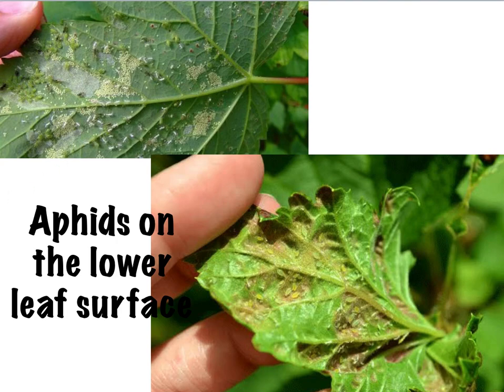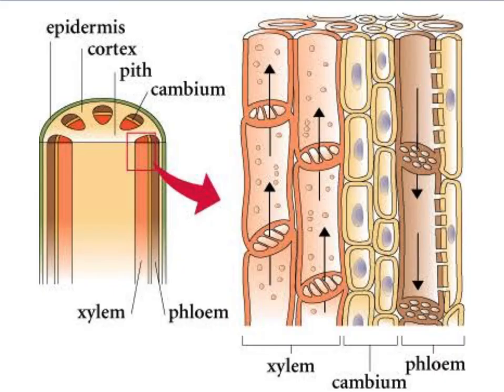That was all about the structure and arrangement of vascular tissues in the plant. In the next part, I'll explain the mechanism of transportation in plants. Subscribe to my channel Roostube and don't forget to click the notification bell. Have a good day.